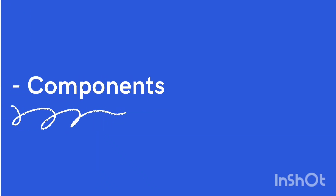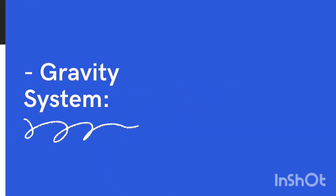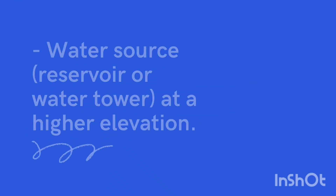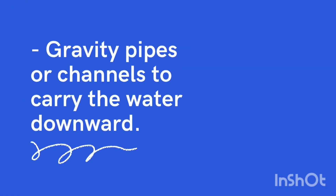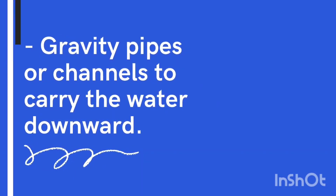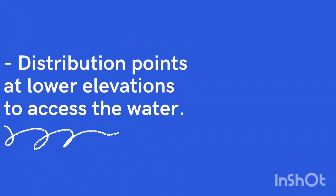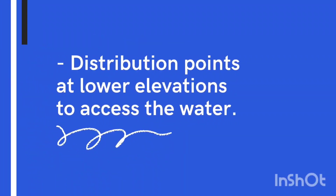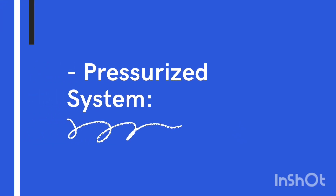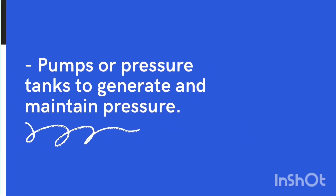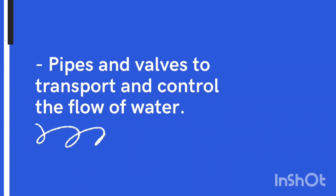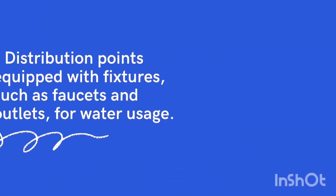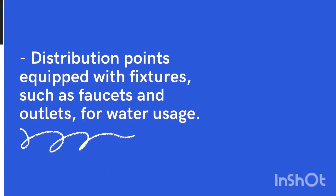Components — Gravity System: water source such as a reservoir or water tower at a higher elevation; gravity pipes or channels to carry the water downward; distribution points at lower elevations to access the water. Pressurized System: pumps or pressure tanks to generate and maintain pressure; pipes and valves to transport and control the flow of water; distribution points equipped with fixtures such as faucets and outlets for water usage.